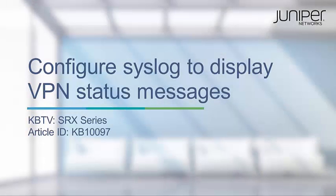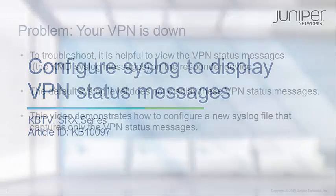Welcome to the Juniper Networks KBTV SRX series. This video will show you how to configure your syslog to display VPN status messages. For a text version of these instructions, please refer to article KB10097. The URL is provided at the end of this video.